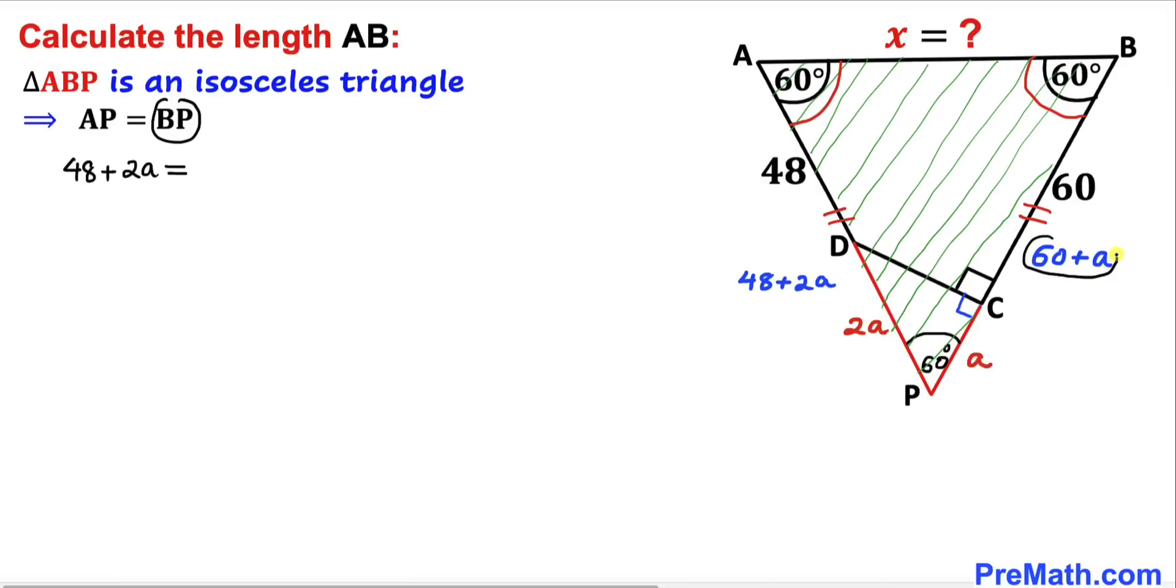Move 48 to the right-hand side and a to the left-hand side. We get 2a - a = 60 - 48. Therefore, a = 12 units, so length PC is 12 units.